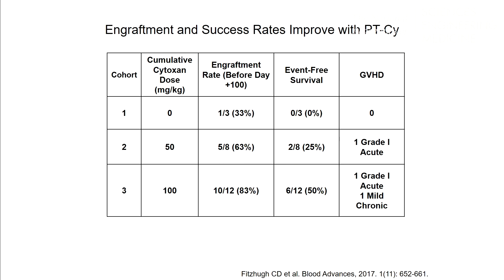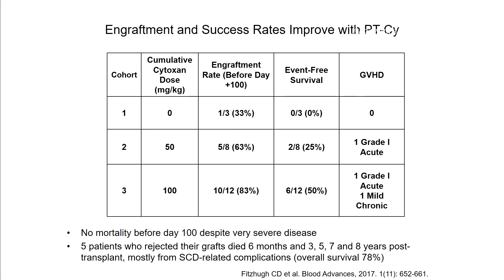The addition of cyclophosphamide improved engraftment and success rates, but we still had a high graft rejection rate. Despite patients having very severe disease including cirrhosis, dialysis, and heart failure, we did not see any mortality before day 100. However, five patients who rejected their grafts died at six months and then three, five, seven, and eight years post-transplant, mostly from sickle cell disease-related complications.